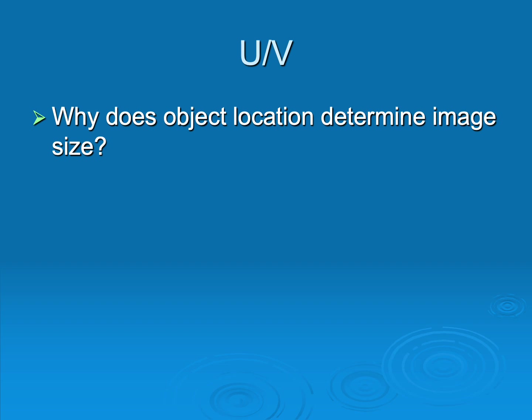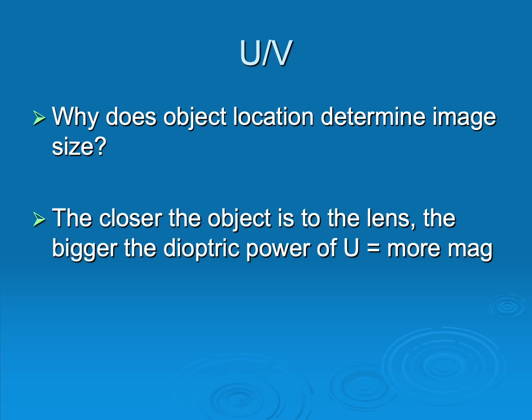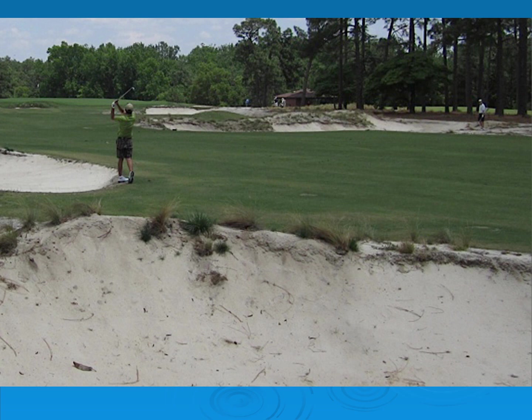Why does object location determine image size? The closer the object is to the lens, the bigger the dioptric power of U, and that gives us more magnification. If our object is 100 centimeters away, U is 1. But if it's 25 centimeters away, 100 divided by 25 is 4 — the dioptric power has gotten larger. Since U is the numerator in U over V, the bigger U is, the bigger the image. So the closer things are, the more magnified they are.